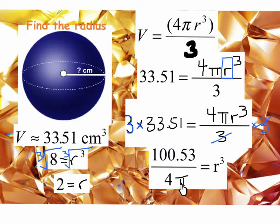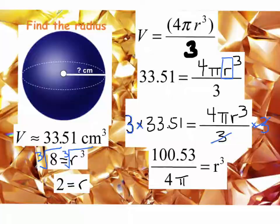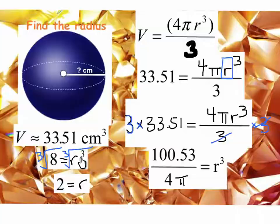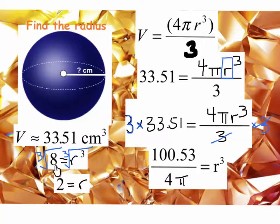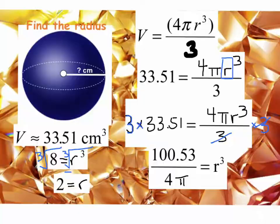Divide both sides by four pi. And once you do that calculation here, you'll get eight equals r to the third. Then you'll take the cubed root of both sides. That's what the cubed root means. The cubed root of eight is two, and that gives us our radius. And this is our final answer.